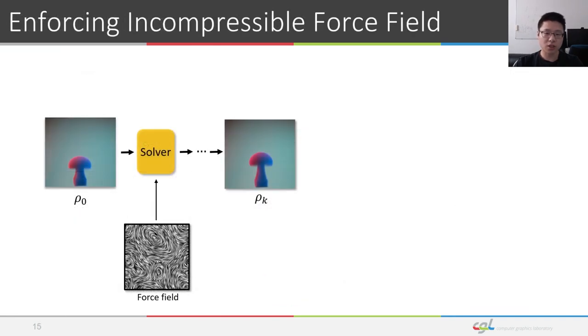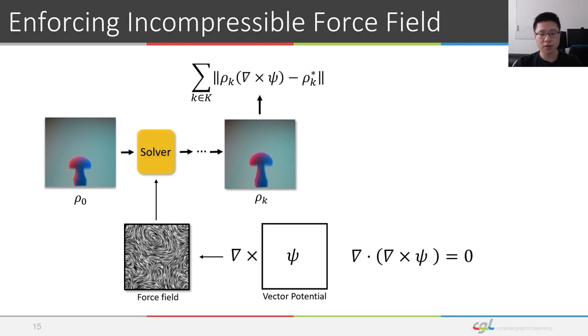Our first contribution is to reduce the space of possible forces to the family of strictly divergence-free velocity fields. We take the curl of the vector potential to generate a force field that is strictly incompressible. Instead of optimizing for a force field, we optimize the objective function with respect to vector potentials. And this is possible because the curl operator is fully differentiable. This is our first dimensionality reduction on the domain. The Helmholtz decomposition shows the space of incompressible vector fields is smaller than the space of all possible vector fields.